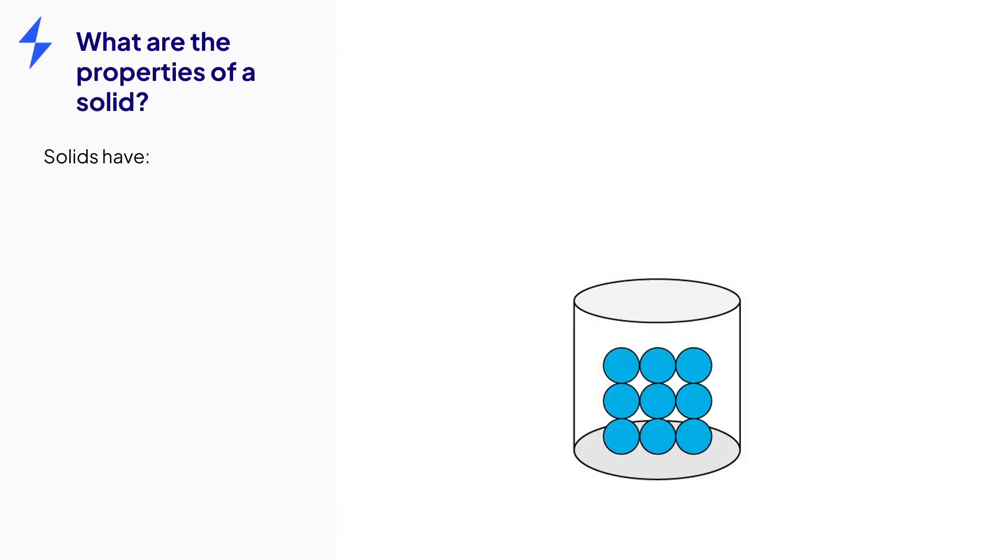Let's have a closer look at the properties for each state. The particles in a solid are unable to move and have no spaces between them so a solid is rigid and maintains a fixed shape and a fixed volume.